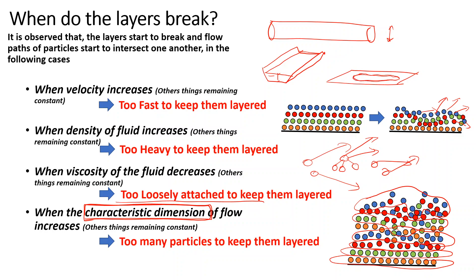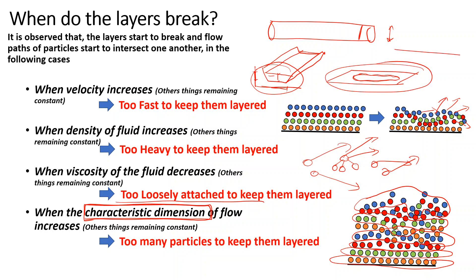So if the pipe diameter increases, or if the channel depth increases — and for channels it involves both depth and width — we generally define some other dimension that accounts for both depth and width of the river or channel. For fluid moving over a surface, the characteristic dimension is the thickness of the flow.